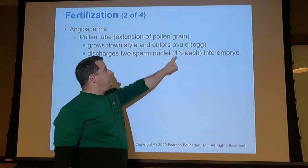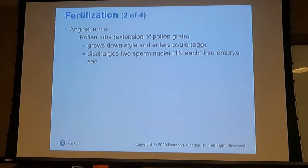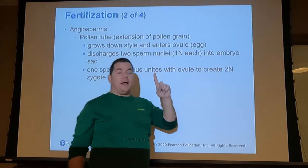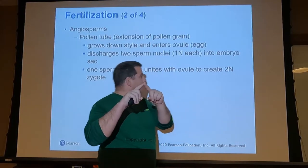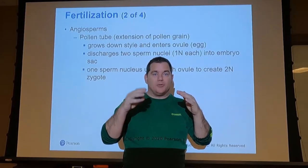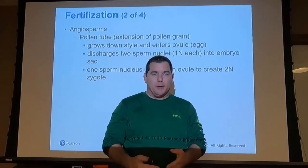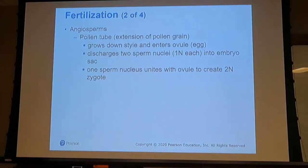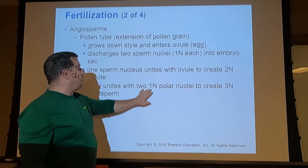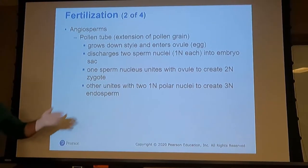The ovule discharges two sperm nuclei, each with one set of chromosomes, into the embryo sac. One sperm nuclei and one from the ovule join to create a diploid zygote — very similar to how humans reproduce. The other sperm nuclei bonds with the polar nuclei to create a triploid endosperm that then becomes food for the zygote.